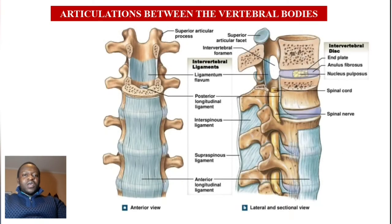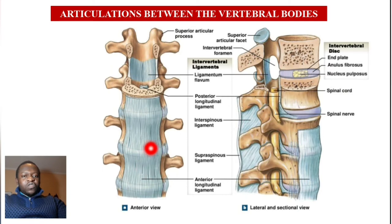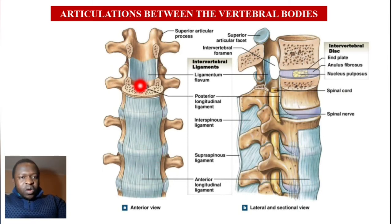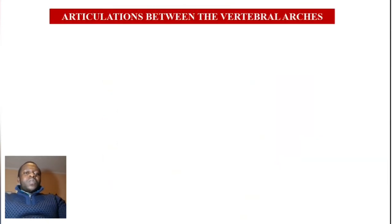Here is an anterior view and a lateral view. Anteriorly you can see the anterior longitudinal ligament, and in the lateral view you can see the posterior longitudinal ligament — the anterior is easy to recognize here. We'll talk about the other ligaments later.